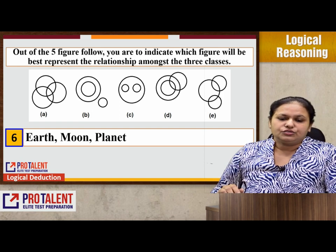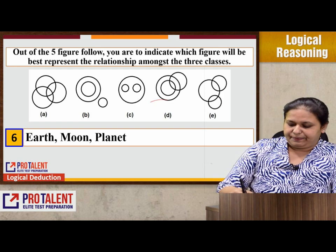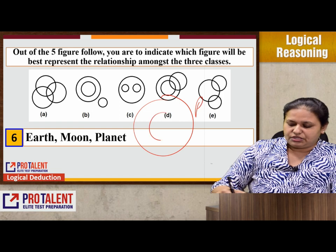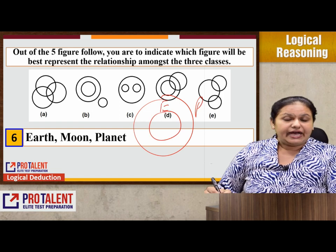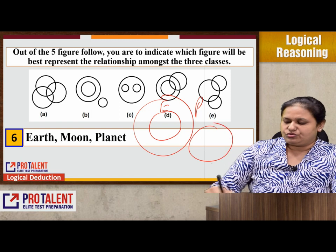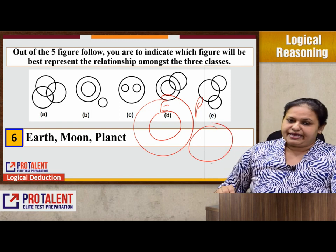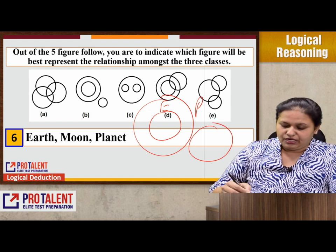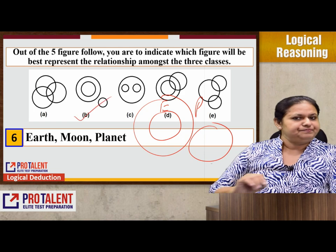Next question: earth, moon, and planet. If I take the planet circle, then earth is going to be part of it. But the moon is a satellite — it doesn't belong to the planets group. And hence the answer is going to be option B.